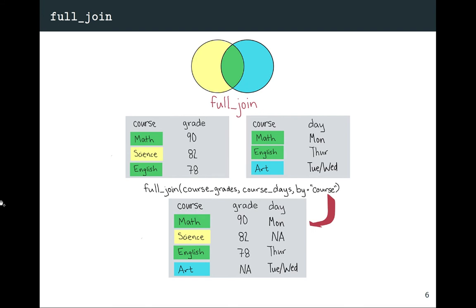A full_join — the first example I showed — keeps everything. It keeps all listings and puts in missing values as NA if a column coming in from one of the two data frames didn't have that listing in the original. For example, the Art value for course only exists in the right data frame, so when we look in the grade column for Art, it has a missing value. Similarly, Science is only in the left data frame, so the day column has a missing value for Science.